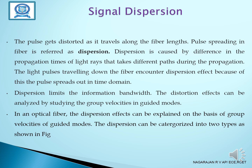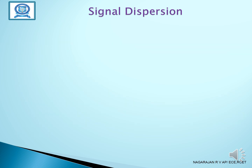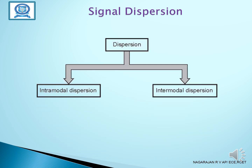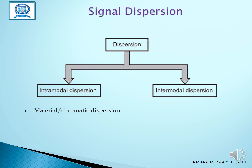Dispersion can be categorized into two types as shown in the figure. Dispersion can be classified into intra-modal dispersion and inter-modal dispersion. Intra-modal dispersion includes material chromatic dispersion, waveguide dispersion, and group velocity model dispersion.